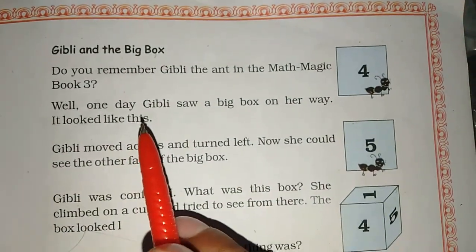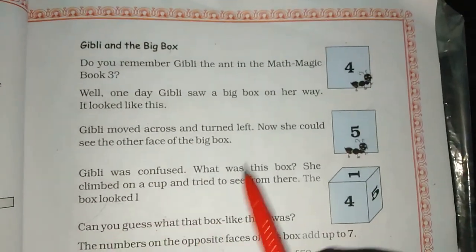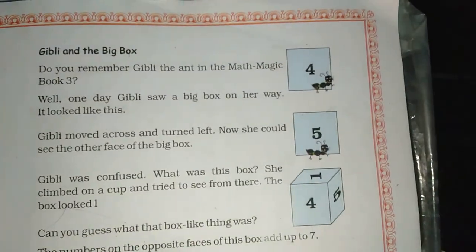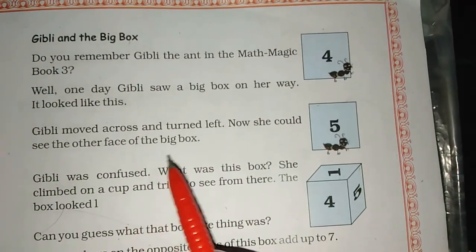In the third class we have one topic. One day Ghibli saw a big box on her way. It looked like this. What happened? What did Ghibli see in the road? A box. Ghibli moved across and turned left. Now she could see the other face of the big box.